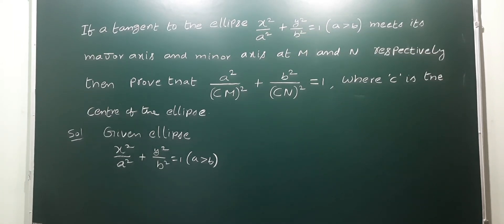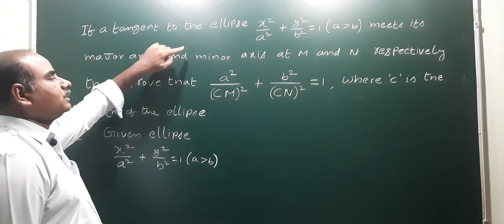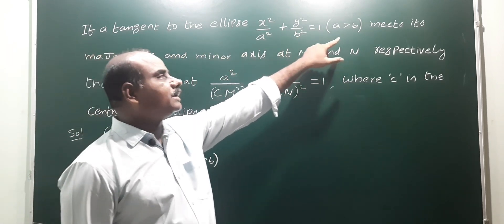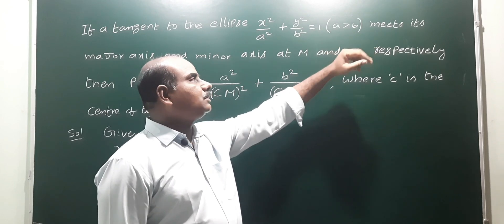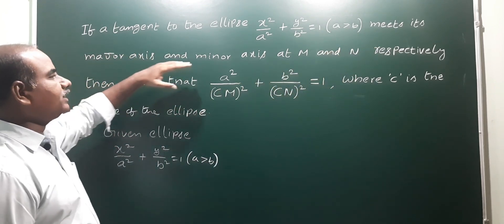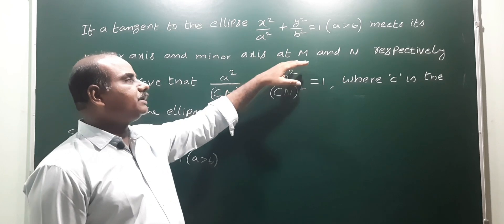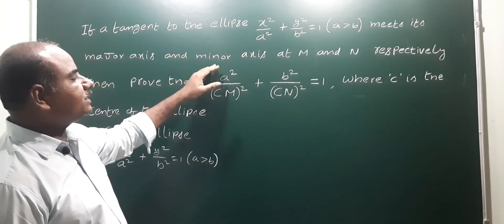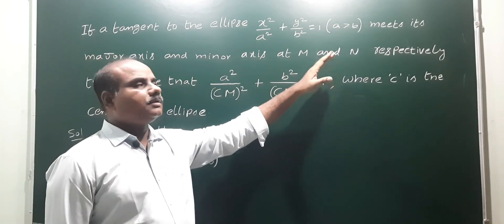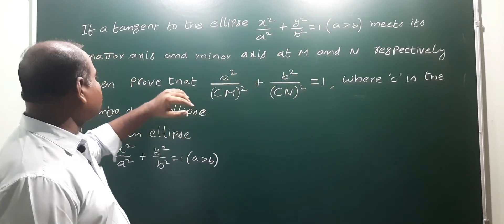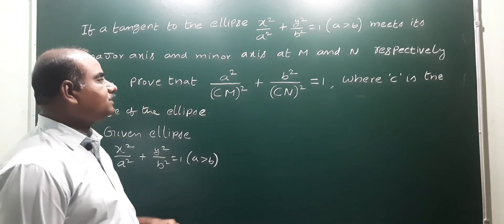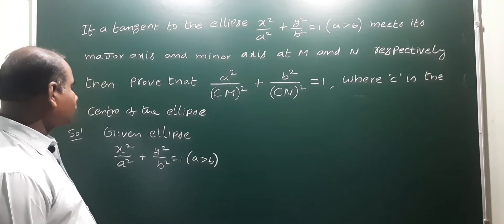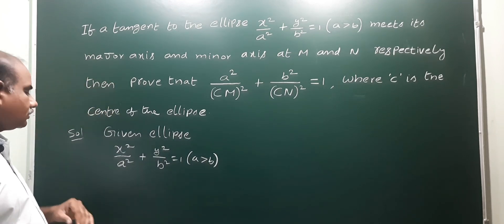Okay, next problem. If a tangent to the ellipse x squared by a squared plus y squared by b squared is equal to 1, where a is greater than b, condition for standard form means its major axis and minor axis at M and N respectively. The ellipse has a tangent, major axis meets at M, minor axis meets at N. Then prove that this condition: a squared by CM whole squared plus b squared by CN whole squared is equal to 1.